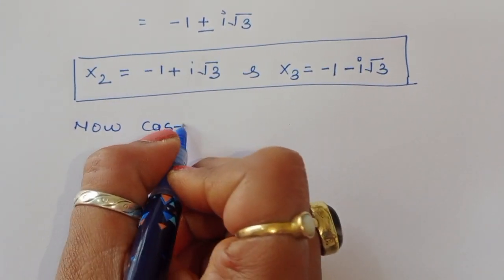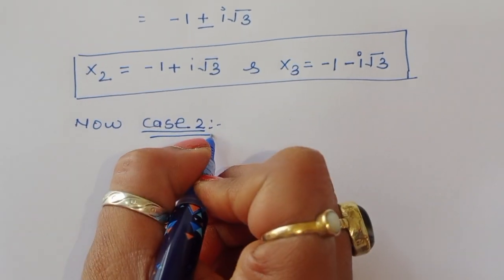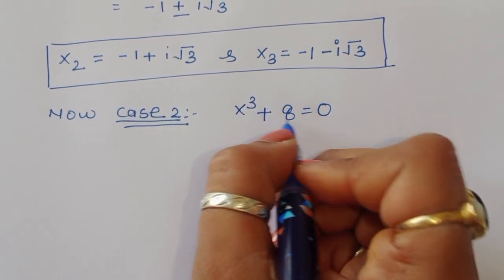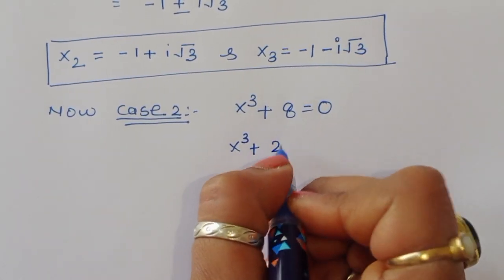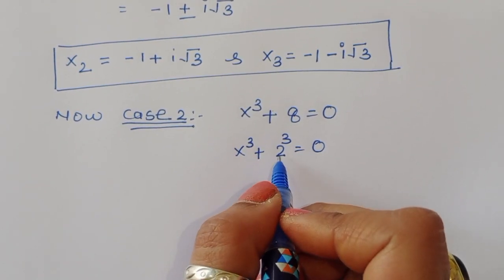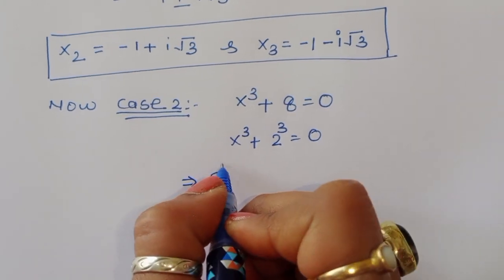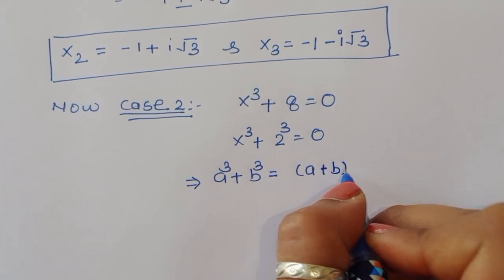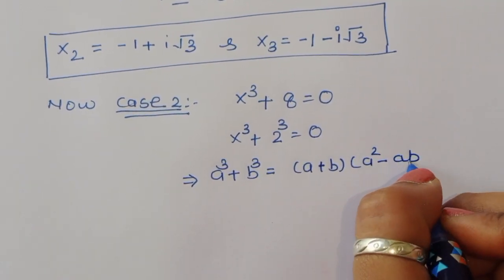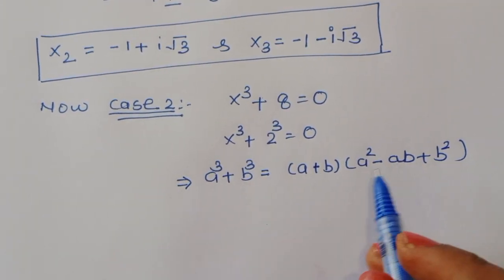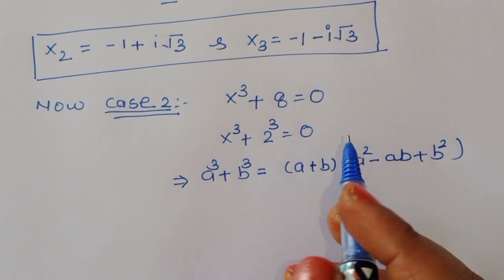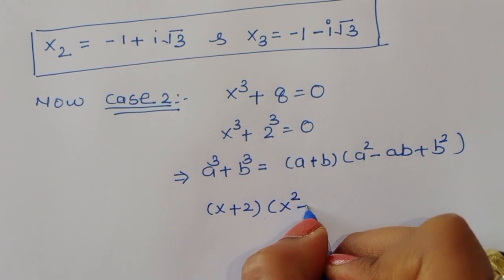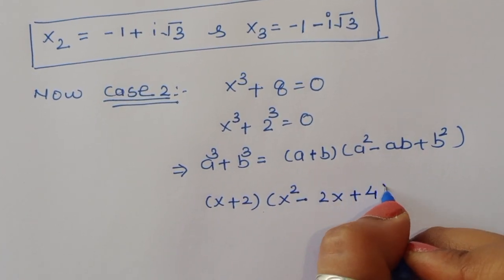Now Case 2: x cubed plus 8 is equal to 0. We convert to cube form: x cubed plus 2 cubed equals 0. The formula for a cubed plus b cubed is a plus b times a squared minus ab plus b squared. Using this formula, we get x plus 2 times x squared minus 2x plus 4 is equal to 0.